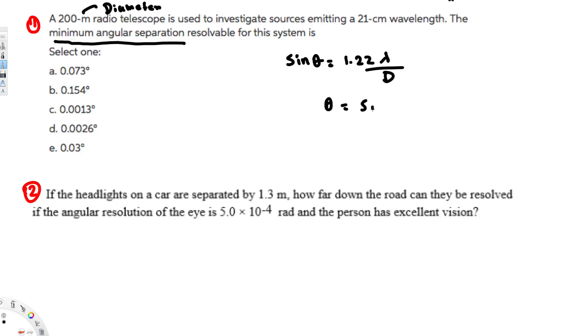Theta is going to be sine inverse of 1.22. We know that lambda is 21 centimeter, and if we convert this into meters that's going to become 21 times 10 to the power of minus 2 meters, divided by d, that is diameter, that is 200 meters.